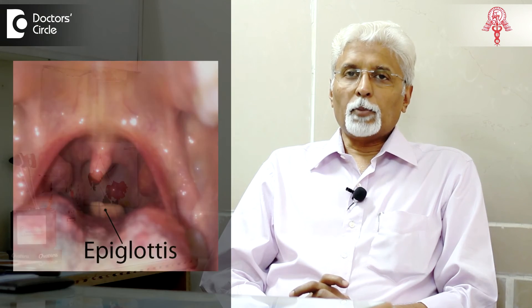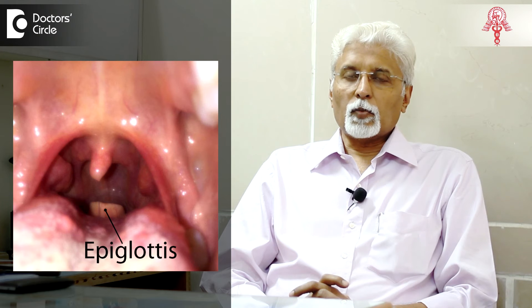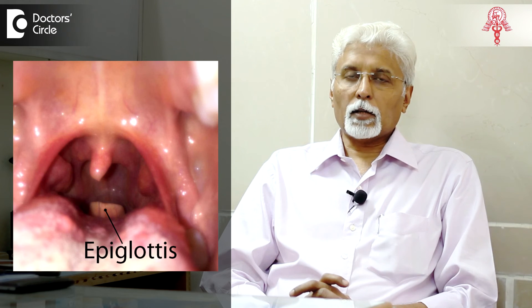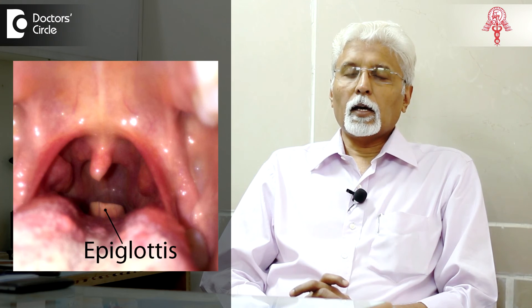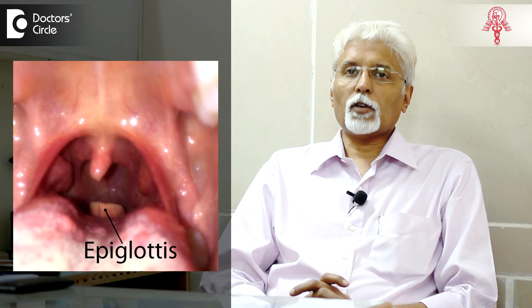One of the most sinister of the lot would be epiglottitis, wherein there is a swelling of the little tongue-like part of the throat which is behind the back of the tongue, and this can swell up and cause acute respiratory embarrassment, sometimes leading to alarming circumstances.